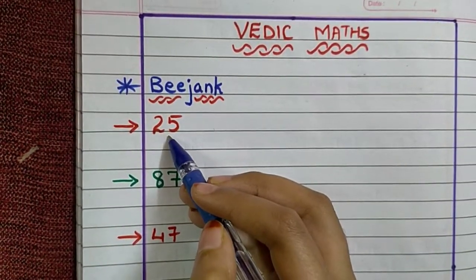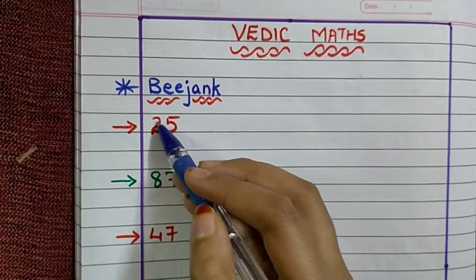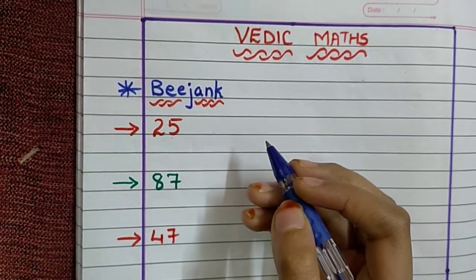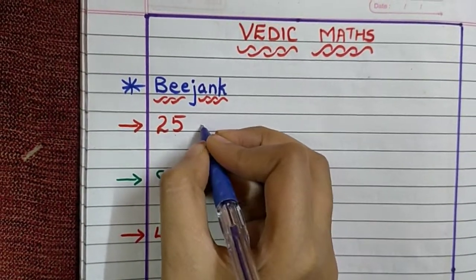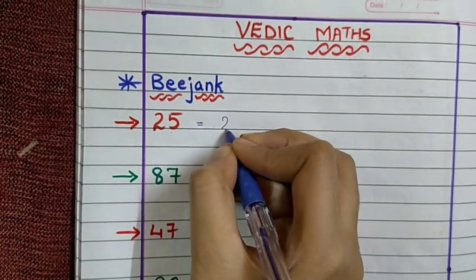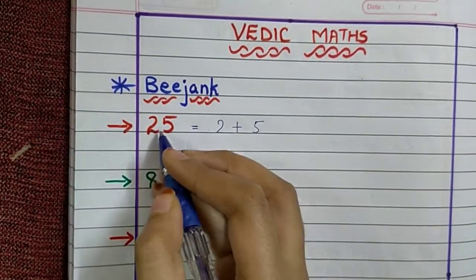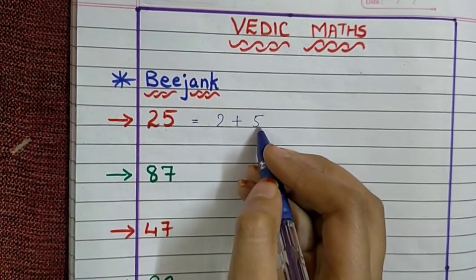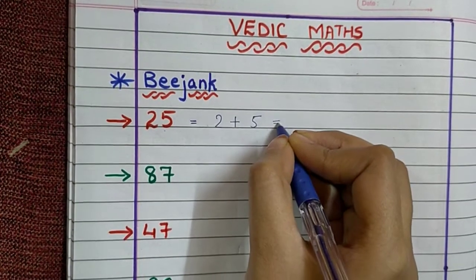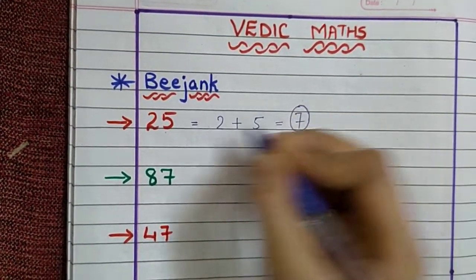The first number is 25 and we are supposed to find the Beejank of 25. How to find the Beejank of a number? The Beejank of 25 will be 2 plus 5. We have to add. So 2 plus 5 is 7. So 7 is the Beejank of 25.